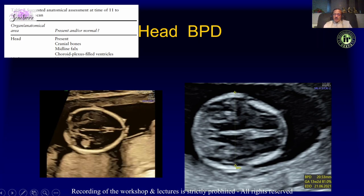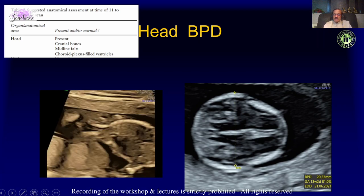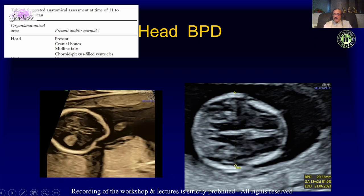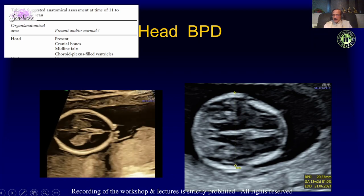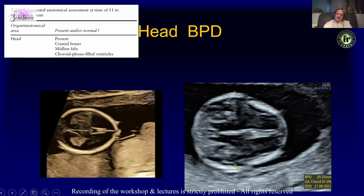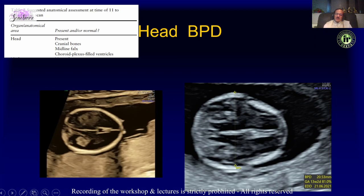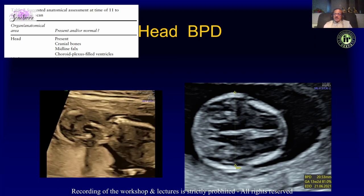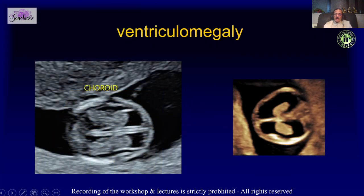It is also a good idea to measure the biparietal diameter, because a small BPD can be a clue toward the diagnosis of spina bifida. Make sure that the choroid plexus fills up the ventricle — this is very important because now you can pick up ventriculomegaly in the first trimester.